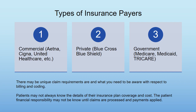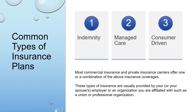Patients may not always know the details of their insurance coverage and the costs, and sometimes their financial responsibility may not be fully known until claims are processed and payments are applied. The common types of insurance plans are the indemnity, the managed care, and the consumer-driven plan. Most commercial and private insurance carriers offer one or a combination of these types of coverages, usually provided by your employer, your spouse's employer, or an organization you're affiliated with such as a union or professional organization.